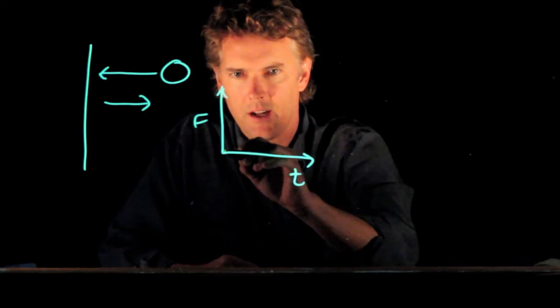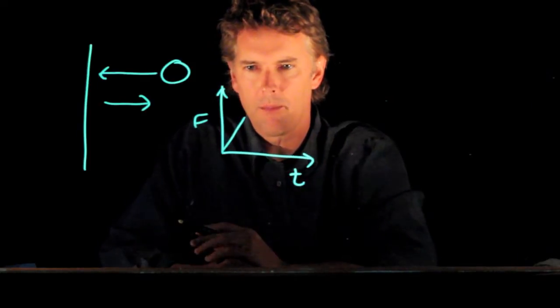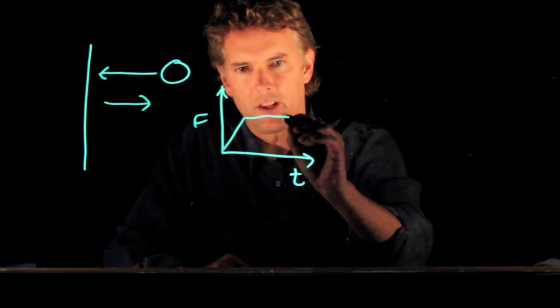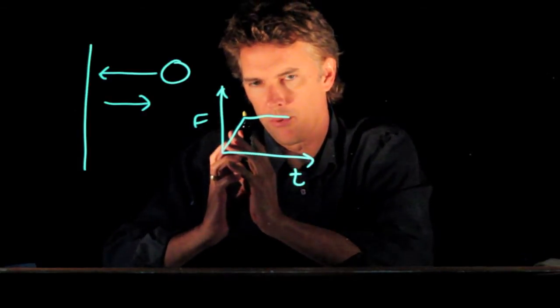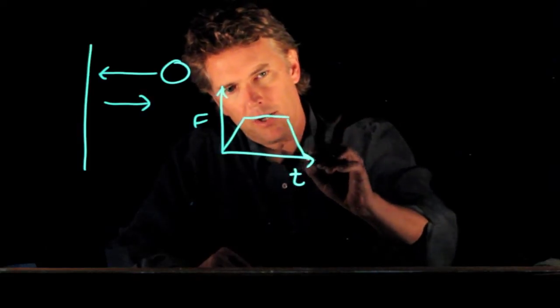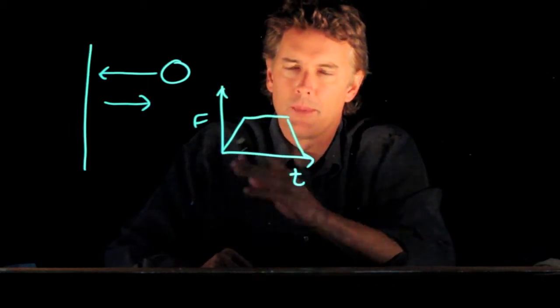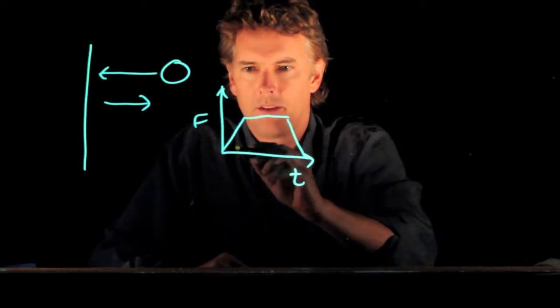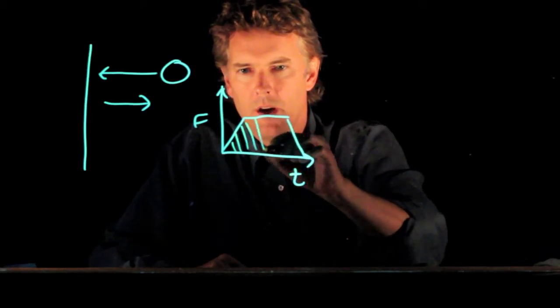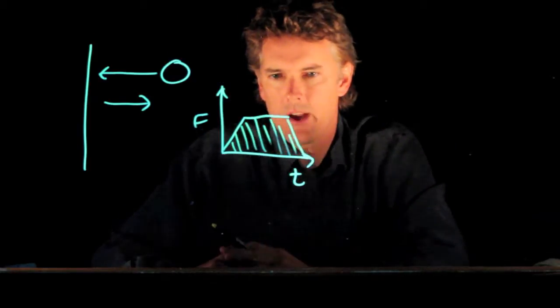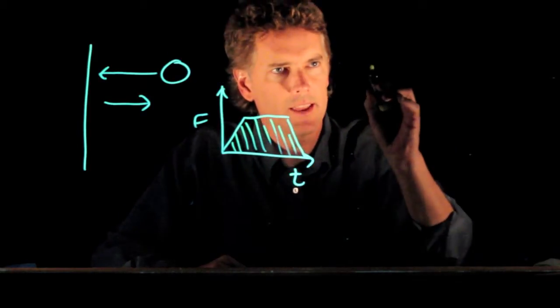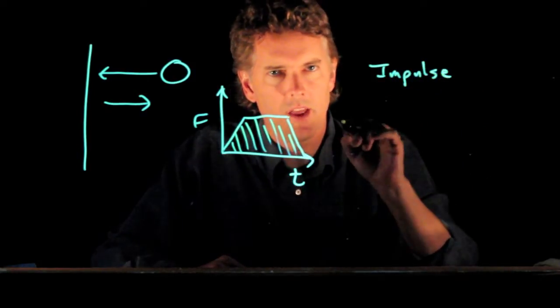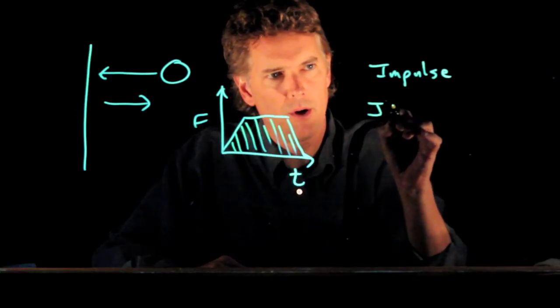So let's say the force does something like this. It ramps up as the ball is getting compressed against the wall. It's fairly constant for some amount of time while the ball is compressed, and then it springs back off and goes back down to zero. So if we think about this problem, what we know is the area under the curve is important. And in fact, the area under the curve tells us the impulse that is delivered to the ball.